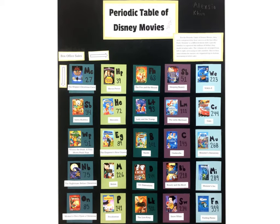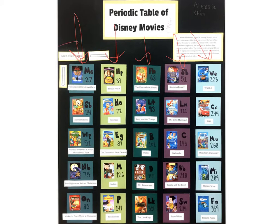Another common idea is Disney movies, organized by box office sales. One thing this example didn't do as clearly was mark the categories — that's important. The categories appear to be: animal movies, princess movies, non-human characters, movies based on books, and holiday-related movies. They organized it so that the lowest box office is at the top left and the highest box office of the 25 they picked is at the bottom right.